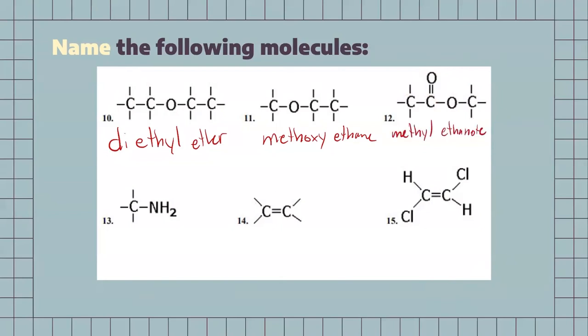Our next one is going to be a one-carbon chain, so it's going to have to do something with methane. Recognizing the functional group — well, that's going to be an amine. So, the proper name for this would just be methylamine.